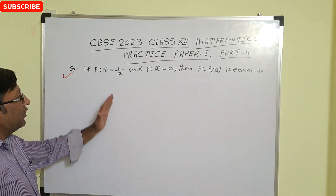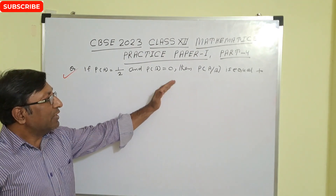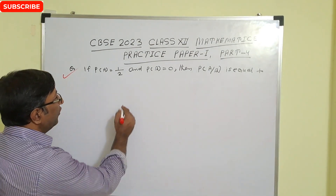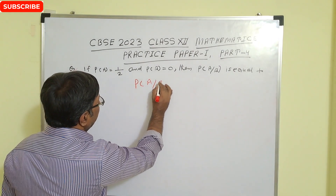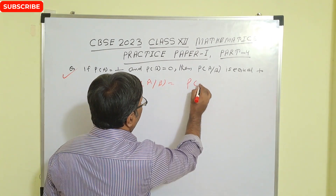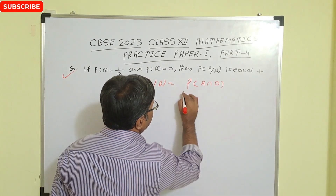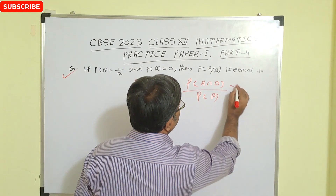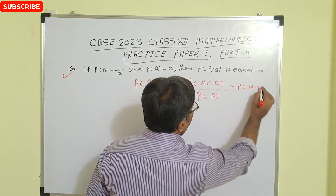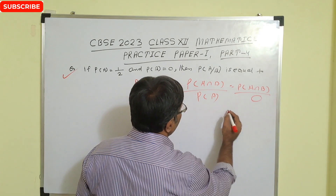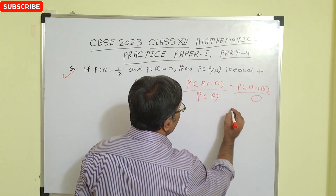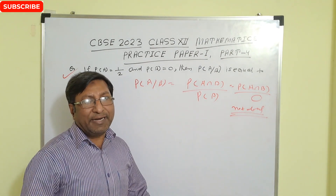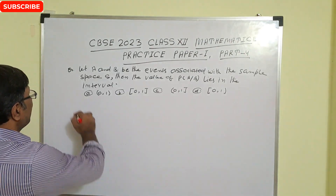Next question: if probability of A is half and probability of B is 0, then probability of A given B equals probability of A intersection B divided by probability of B. Here probability of B is 0, so we have a number divided by 0, which is not defined. So the answer is: not defined.